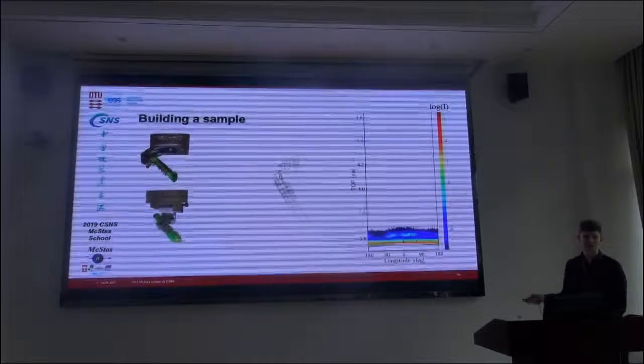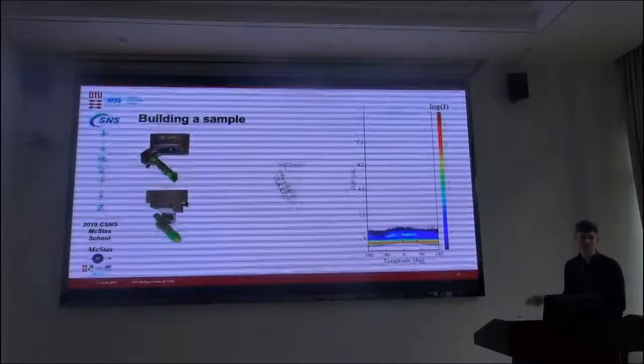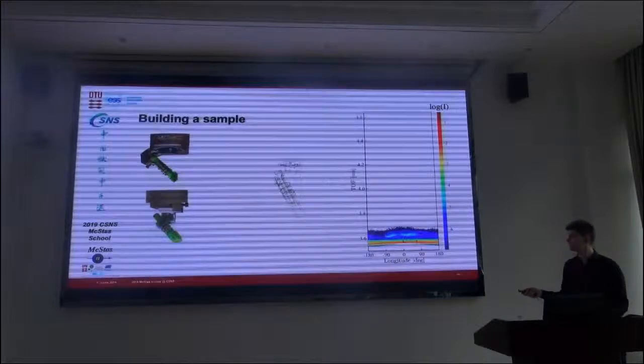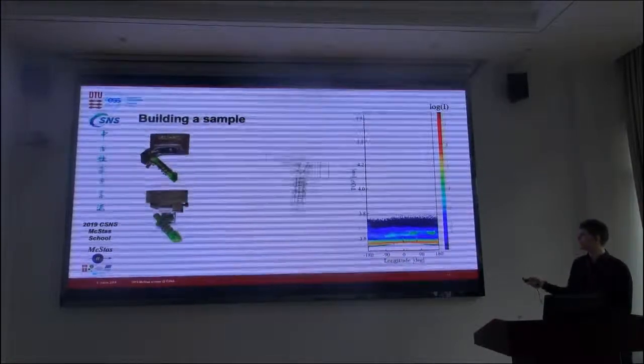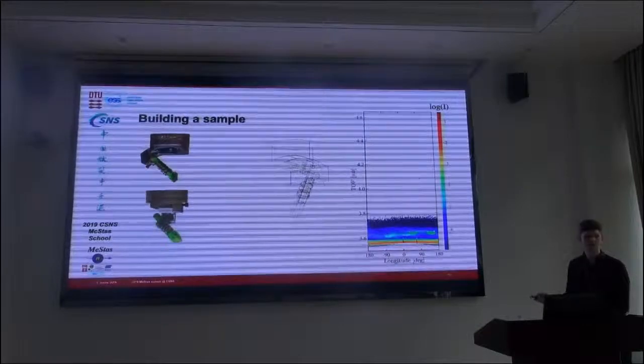Then the goniometer itself. Oh, we actually get some delayed scattering. Of course, this is on a logarithmic axis, but still, we see something. We add the base of the sample holder, and more spurious signals start to appear.